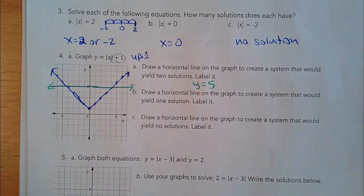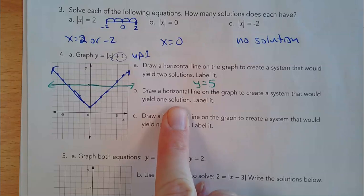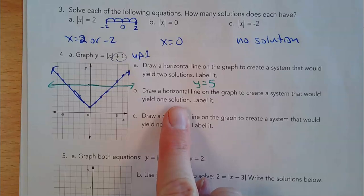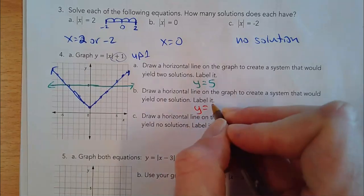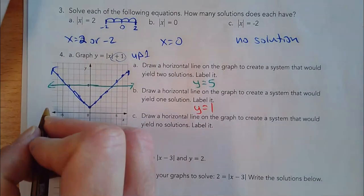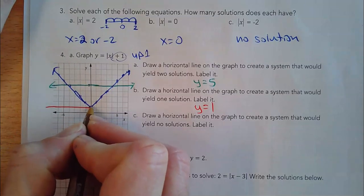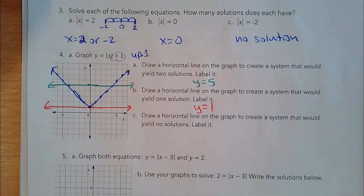Now draw a horizontal line that creates one solution — there's only one answer. Where would the line have to be? y equals 1. If I draw a line y equals 1, that's going to hit the graph at exactly one place — just one solution right there.